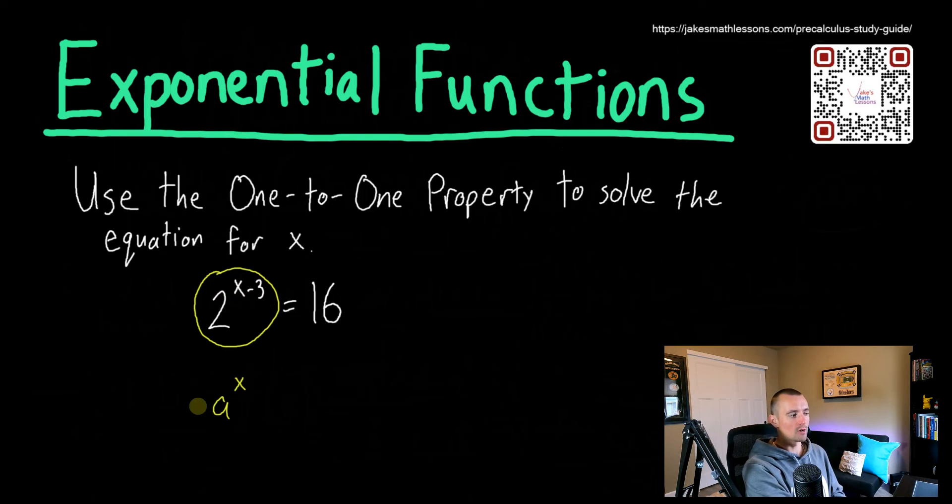So usually in those cases, the form that you would actually see this is a times b to the x. And like I said, there could be other things like a plus k over here, a minus h up in the exponent. There's all sorts of other kind of transformations, translations that you can apply to this.